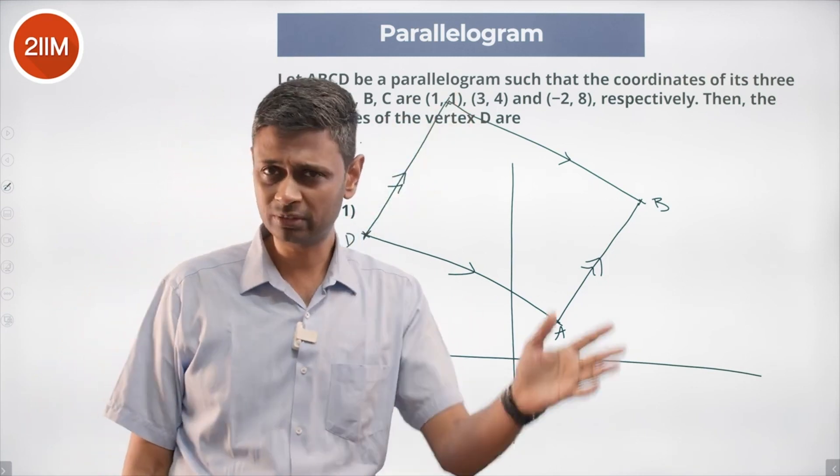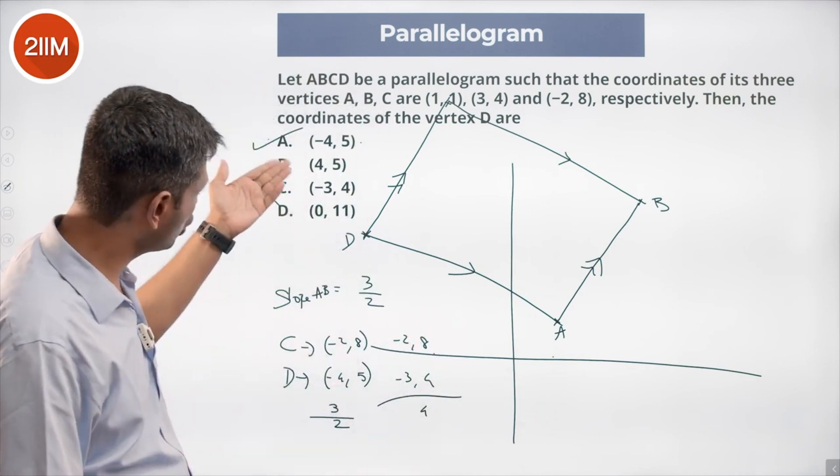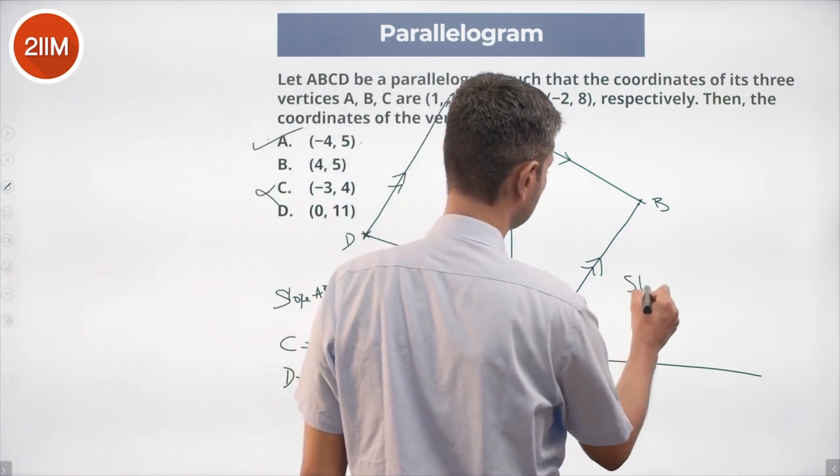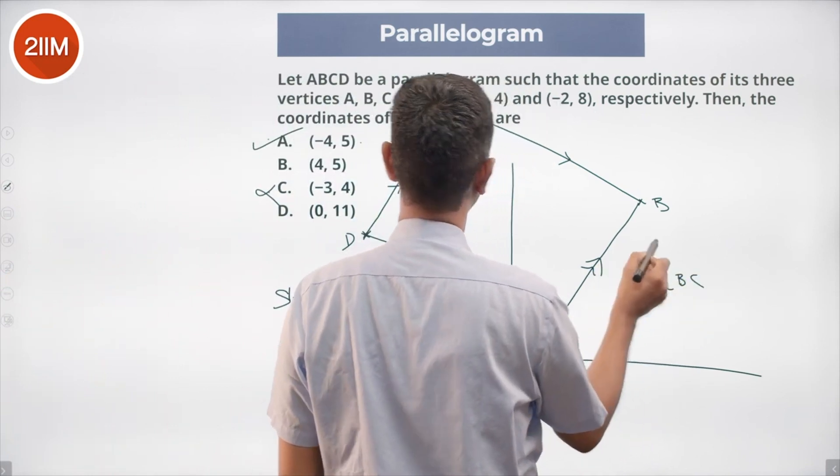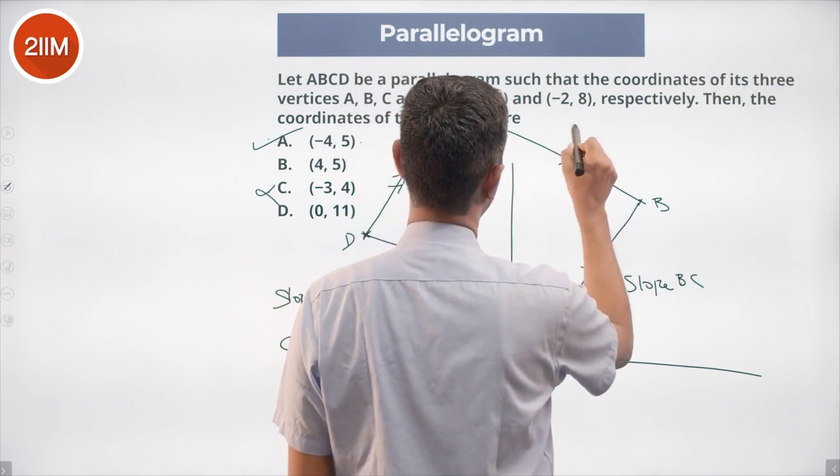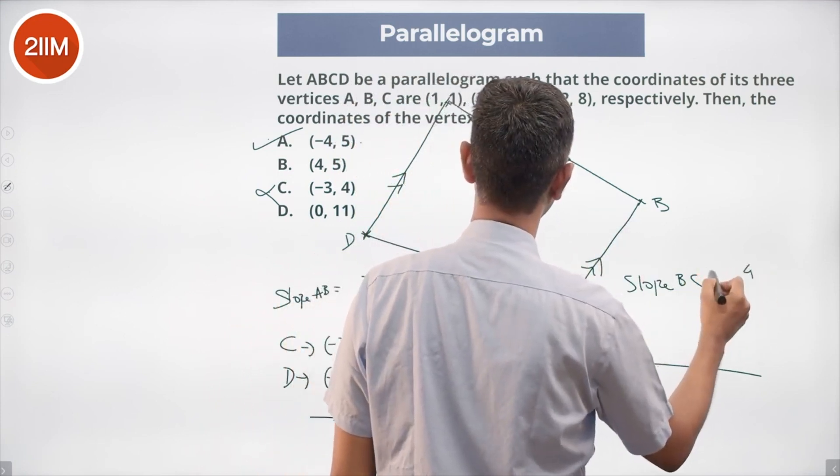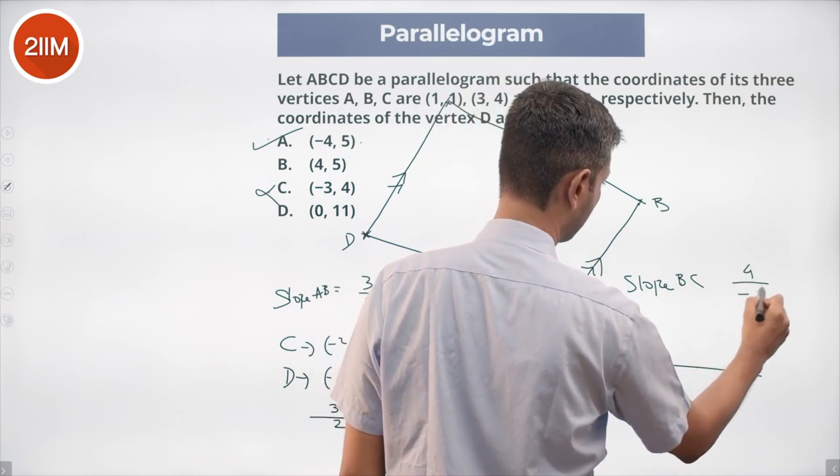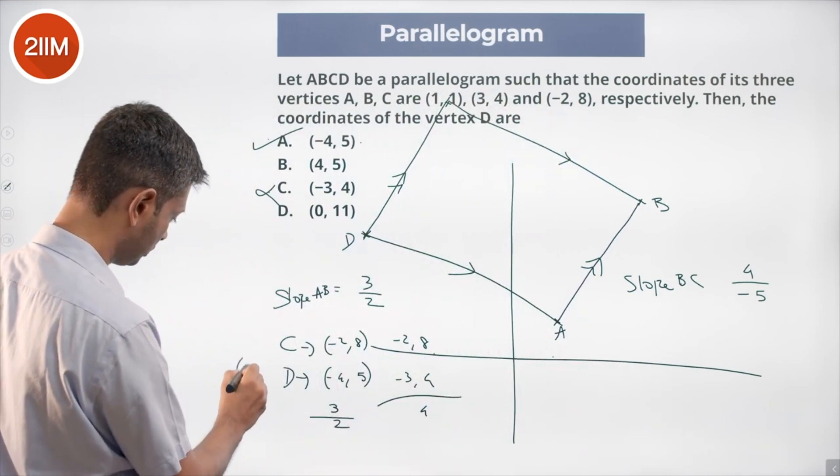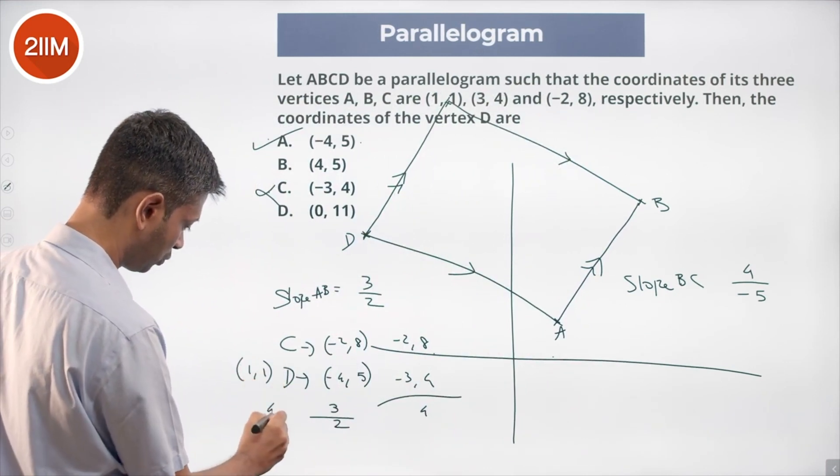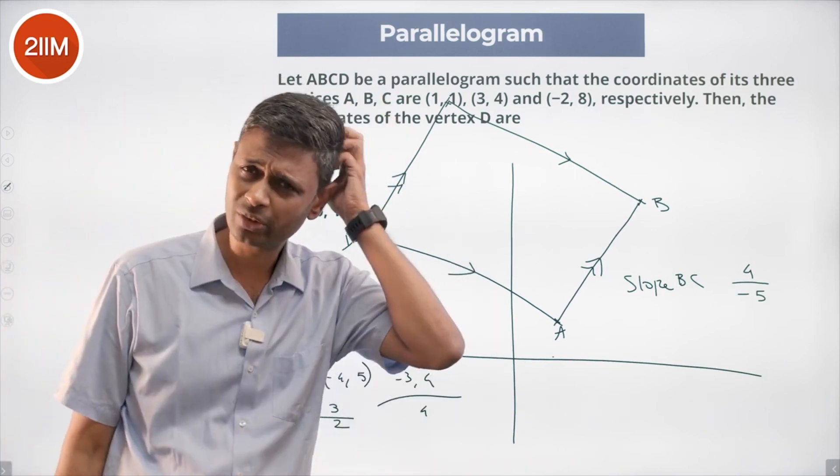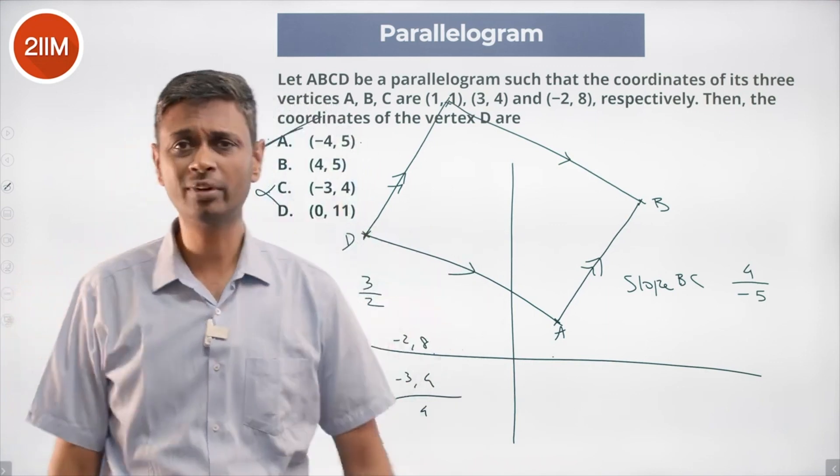Slope of BC: B is (3,4) and C is (-2,8). 8 minus 4 is 4, -2 minus 3 is -5, so slope is -4/5. Slope of AD: A is (1,1), D is (-4,5). 5 minus 1 is 4, -4 minus 1 is -5, so 4 by -5. Yep, that also works. This is the answer.